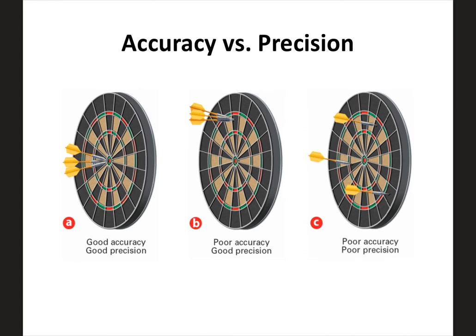Here are examples using dart boards. Good accuracy and good precision: all three darts are dead center and close to each other — accurate because they're near the center, precise because they're close to each other. Good precision but poor accuracy: darts aren't hitting the center, but all three are very close to each other. That's easy to fix with a slight adjustment. The far right example shows neither — darts aren't accurate and are all over the place, not close to each other, so not precise. That's tougher to fix.